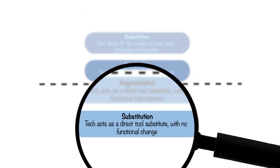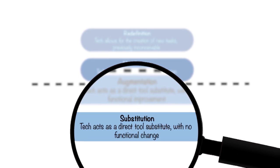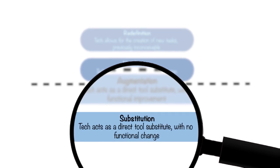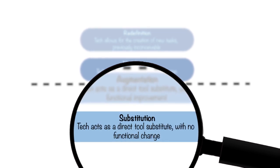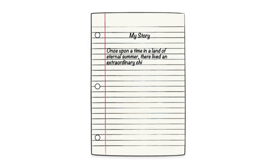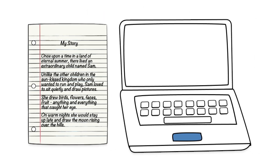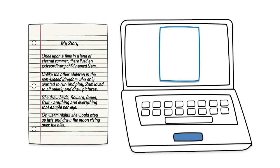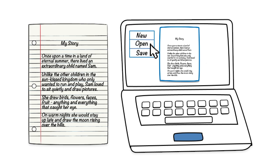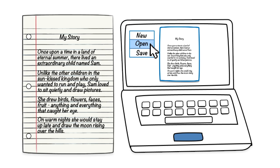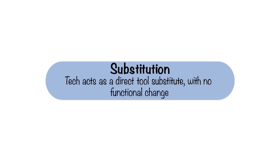In substitution, technology acts as a direct tool substitute with no real functional change to the task. For example, take creative writing. What if you had students write a story using a word processing program? In this case, students are substituting a handwritten story for a typed story. The task is the same with no real change in student engagement.